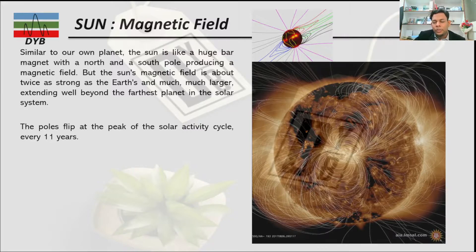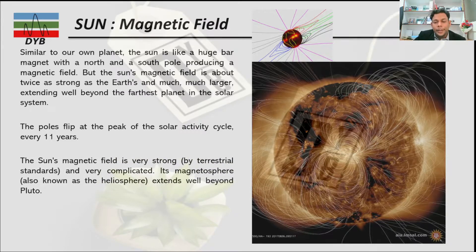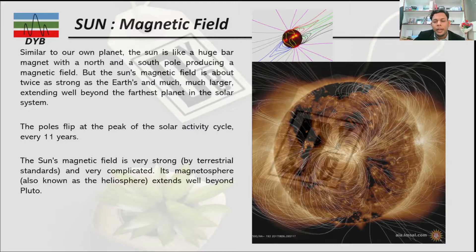An interesting fact about the solar magnetic field is that the poles flip at the peak of the solar activity cycle every 11 years — so the north and south poles can flip from south to north. The Sun's magnetic field is very strong compared to terrestrial standards such as Mercury, Venus, Earth, and Mars, but it is also very complicated because it keeps changing with ongoing solar activities.